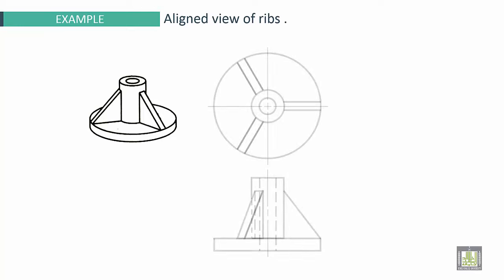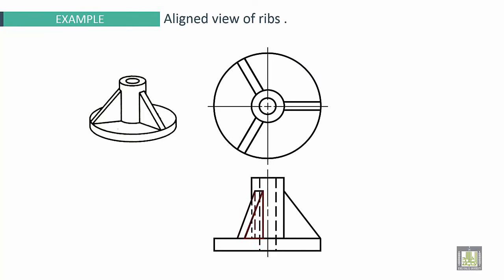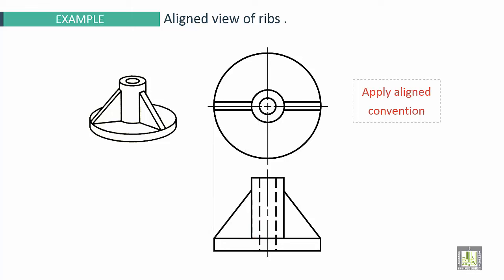For the rib, I have an example here. We have to move the rib to the principal axis, apply Aligned convention, and we represent the rib in imaginary position.